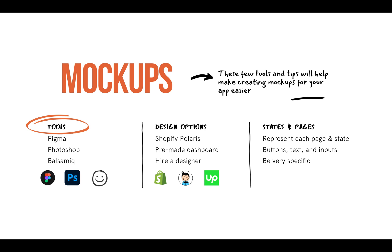Another important thing Figma allows you to do is create prototypes. Prototypes are the next step after mockups — you connect multiple mockups into a flow that can simulate a button click for your developers. This lets you send them a front-end design prototype that simulates app functionality: they'll know exactly what happens when they click specific links, what page it goes to, or what pop-up appears. In fact, once we started using Figma, our specifications became way shorter because the visualization Figma enables is just incredible.